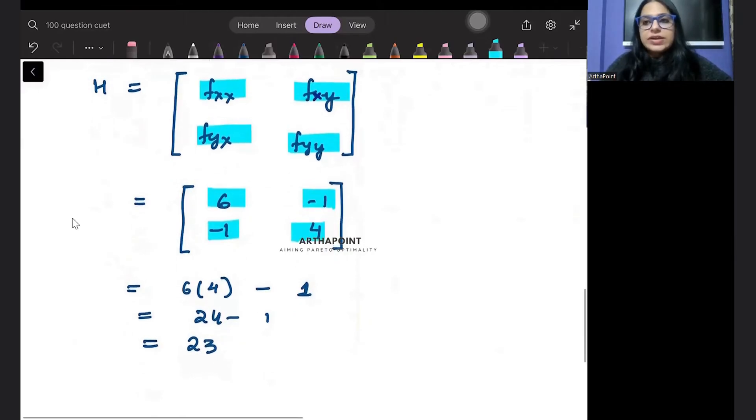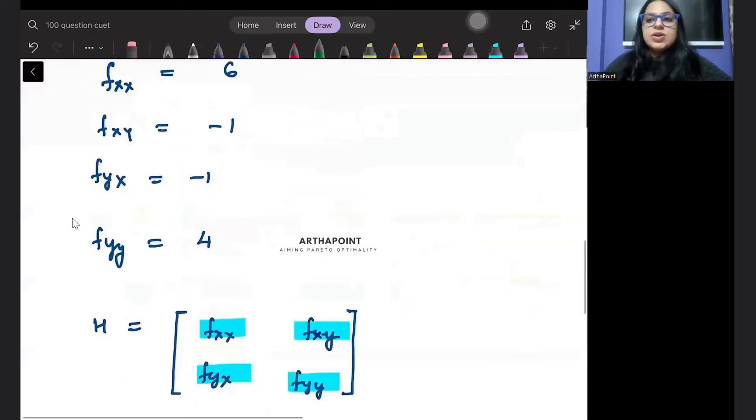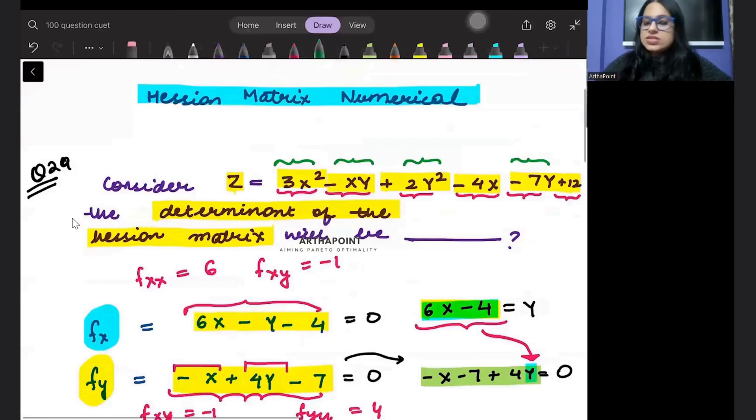Now question is asking find its determinant. So 24 minus minus 1 into minus 1. So 24 minus 1 that means 23. So the determinant of the Hessian matrix will be 23 and that will be the answer to this question. Okay, thank you.